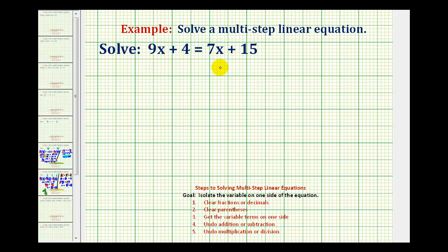We want to solve the given linear equation in one variable by isolating the variable on one side of the equation. Notice what's different about this type of equation is that we have variable terms, or in this case x terms, on both sides of the equation.